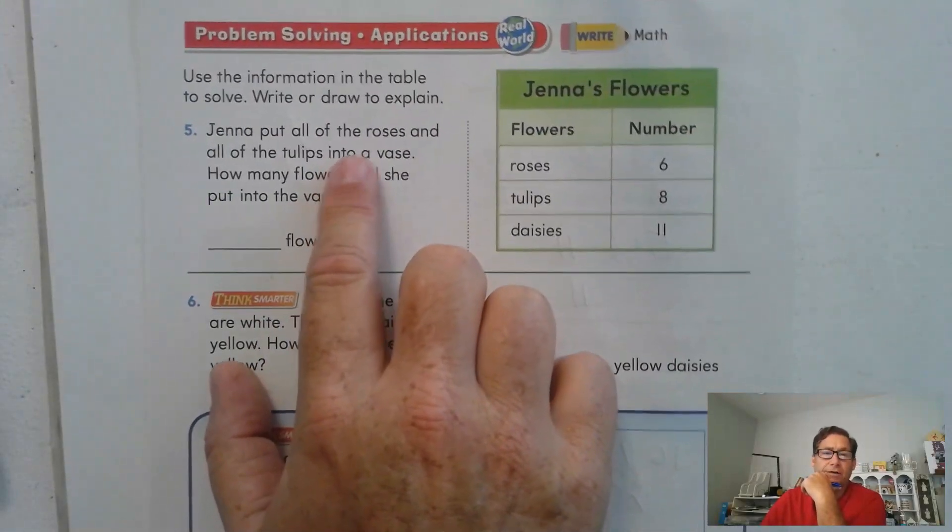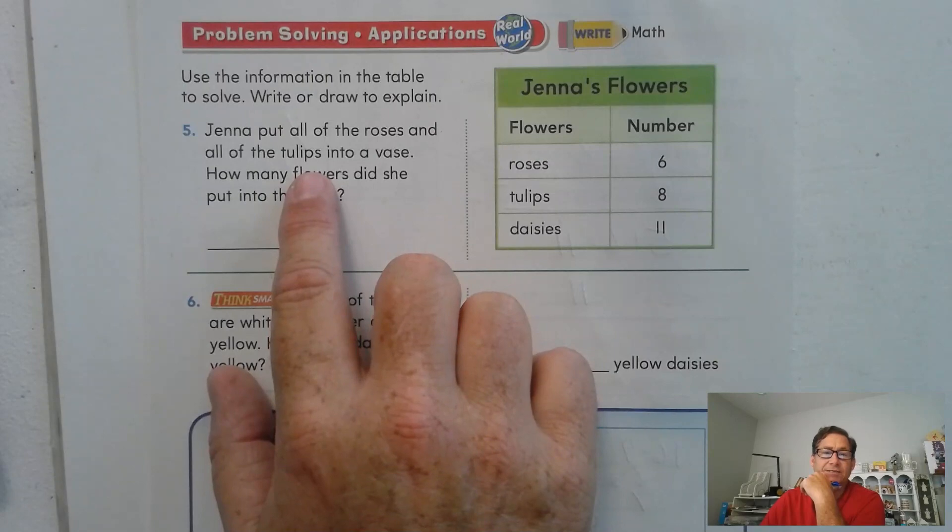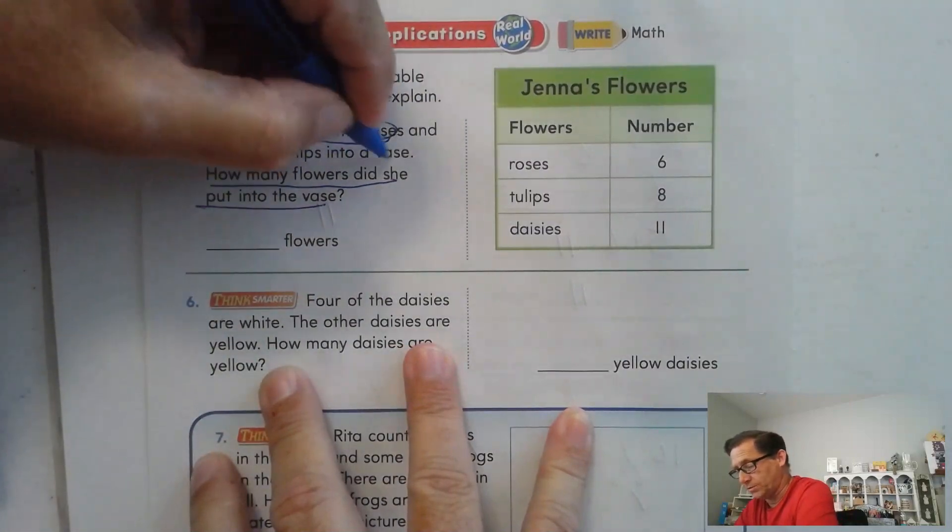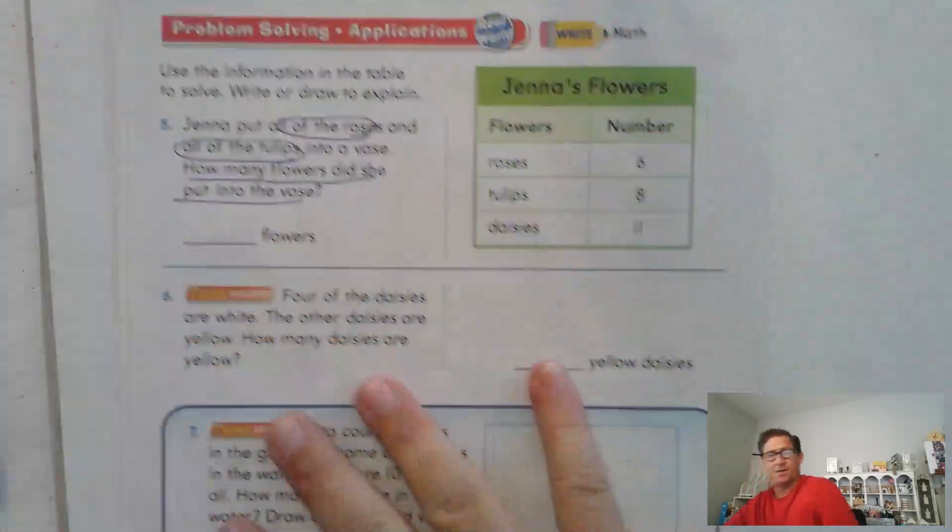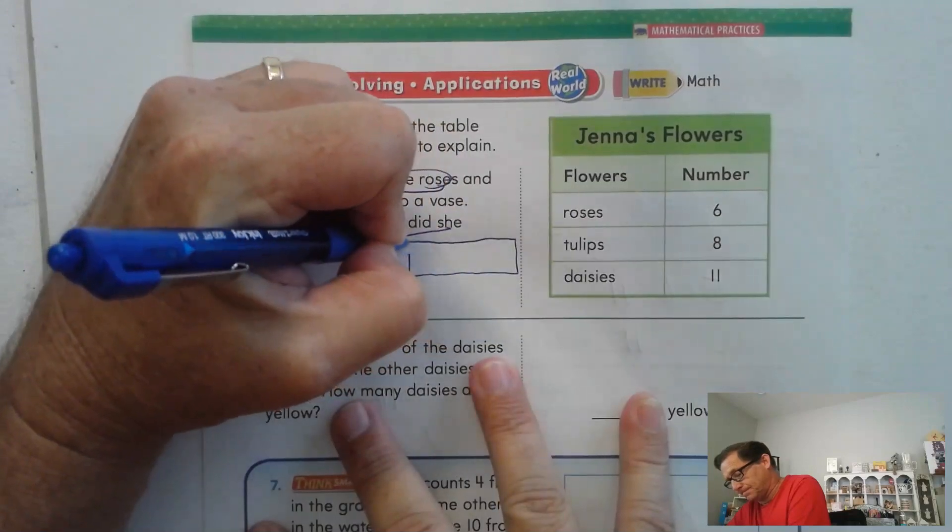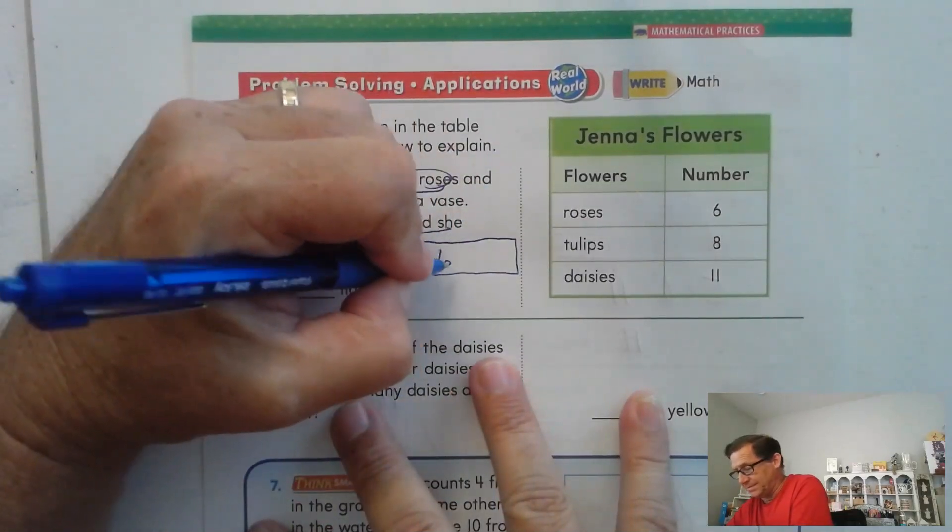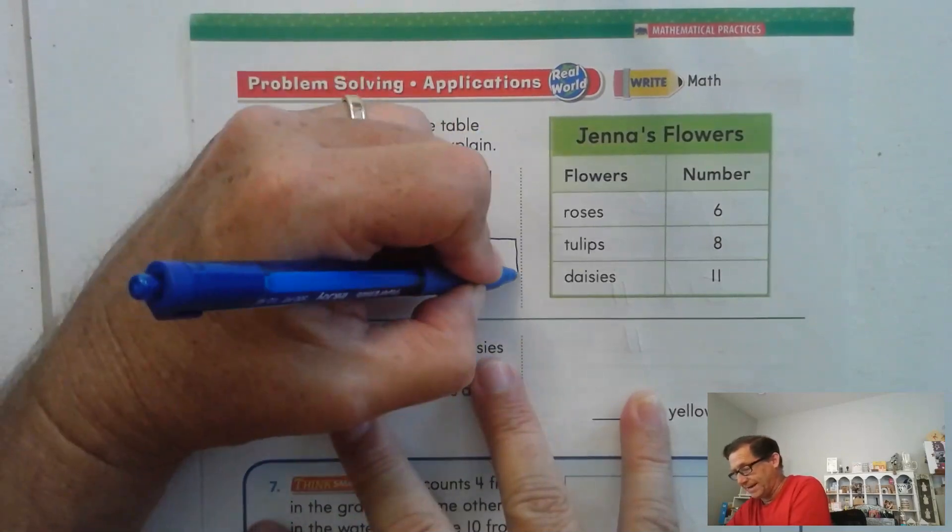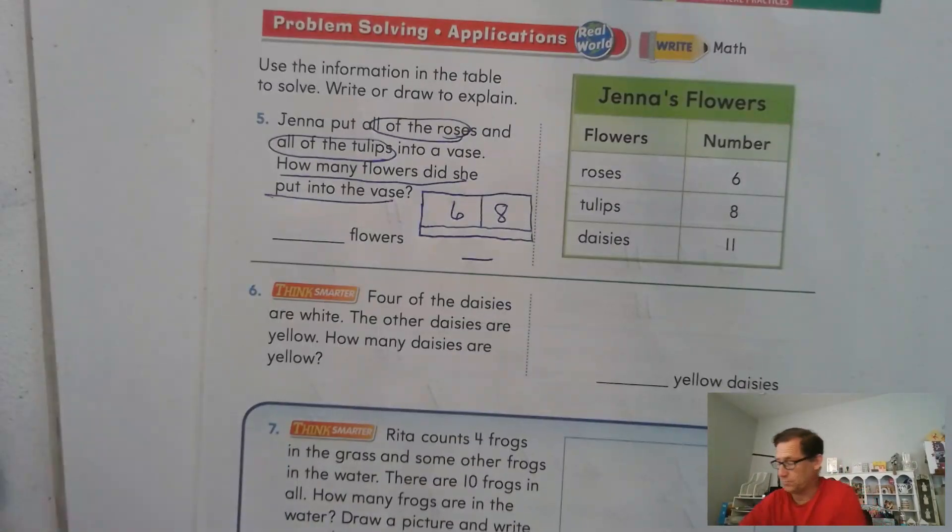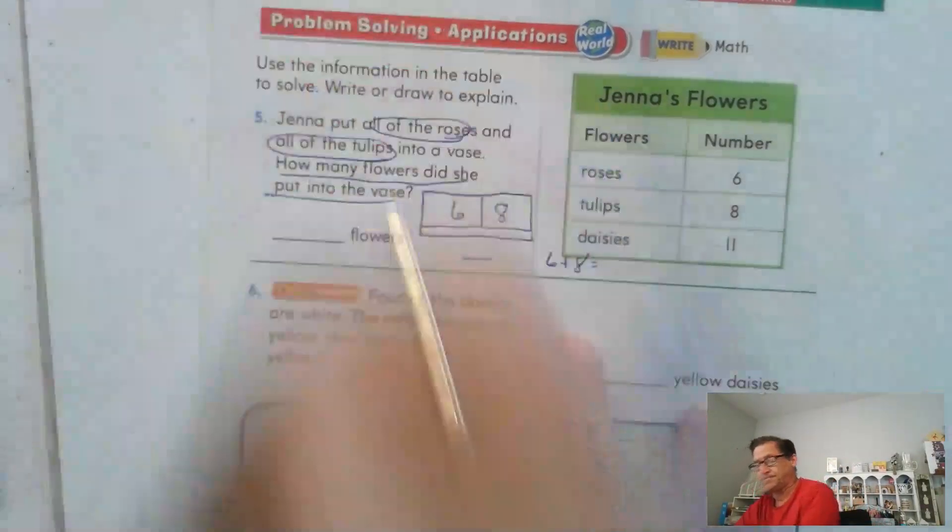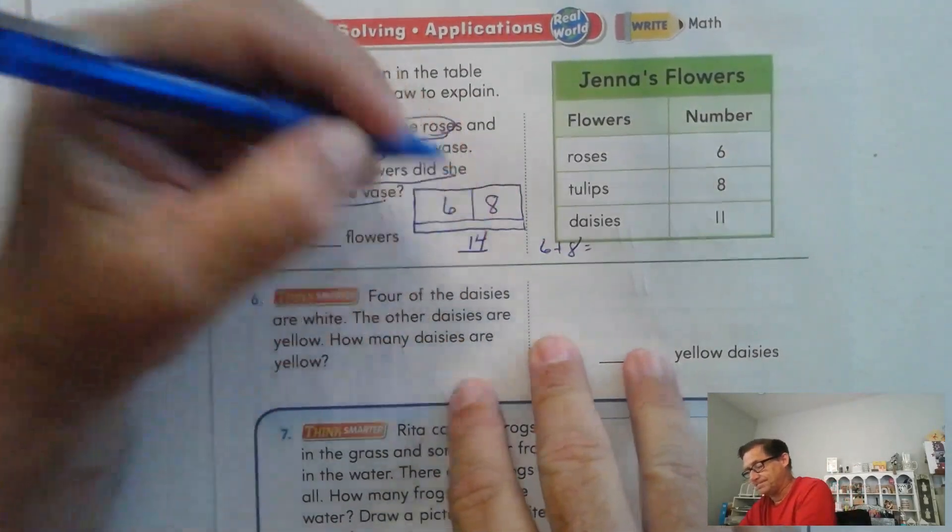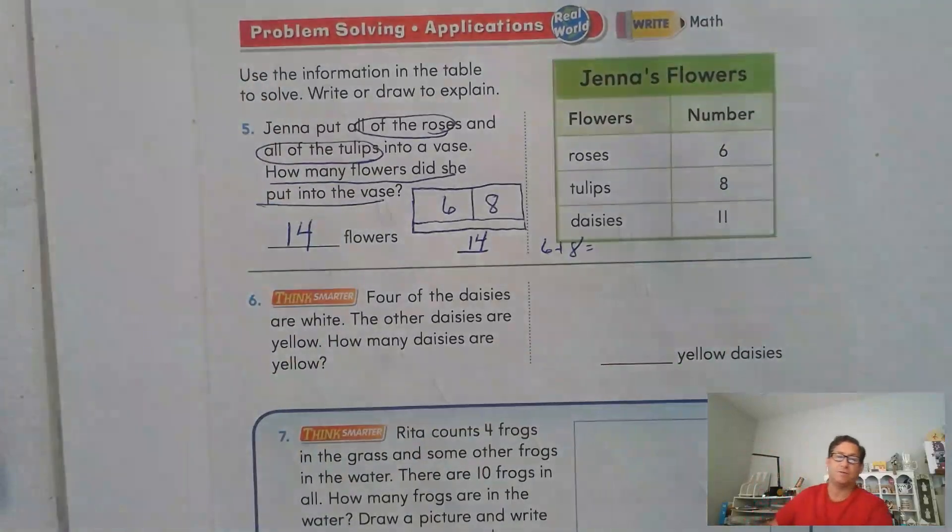All right. So Jenna put all of the roses and all of the tulips into a vase. How many flowers did she put into the vase? All the roses, all the tulips. So we could draw a bar model to represent this. Okay. So she put all of the roses, which was 6. And she put all of the tulips, which was 8. So how much is that together? Well, what's 6 plus 8? Well, 8 plus 2 is 10, and 10 plus 4 is 14. So she put 14 flowers into the vase.